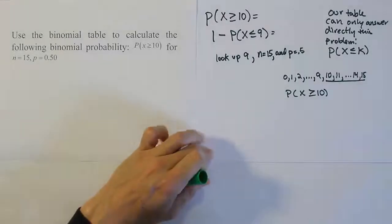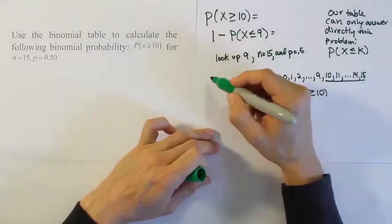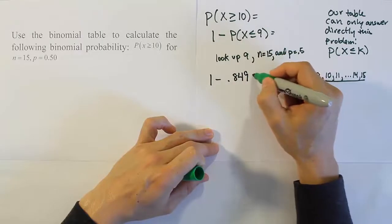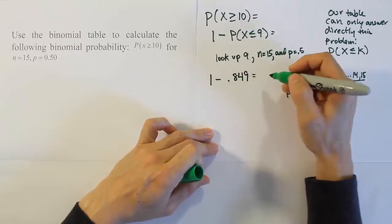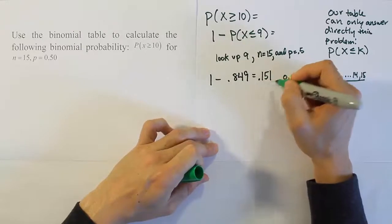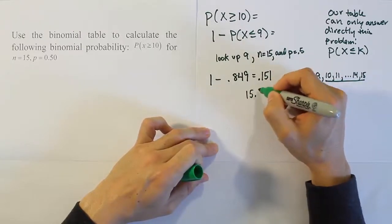Okay, so the table gave us 0.849, so our answer becomes 1 minus 0.849, because this part was the 0.849. And then we just have to do our subtraction, so we'll get 0.151 or about 15.1%.